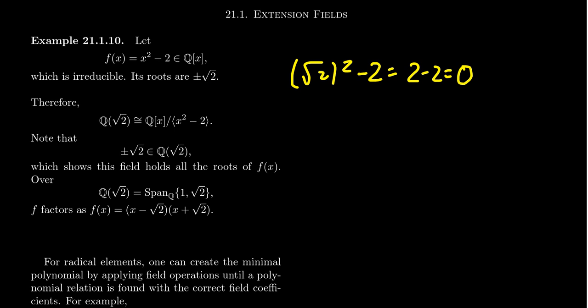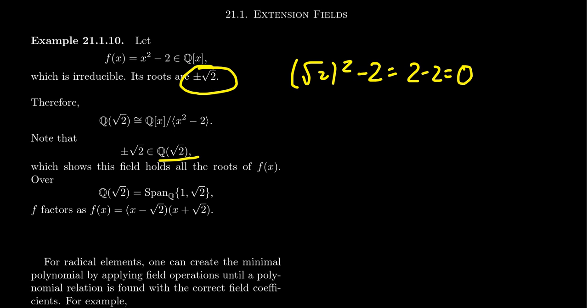Let's look at the extension field where we adjoin √2 to the rational numbers. By Kronecker's theorem, Q(√2) is isomorphic to Q[x] mod the ideal (x² - 2). We can always build an extension field to contain the root of an irreducible polynomial. In Q(√2), adjoining √2 also gives us -√2 because that's the additive inverse, so we gained all roots of x² - 2.